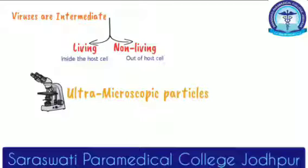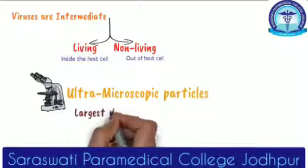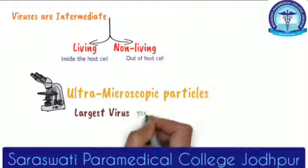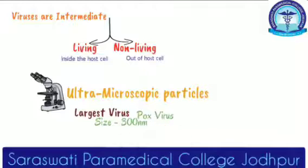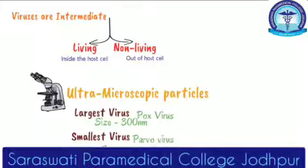Larger viruses can be seen with the light microscope, such as pox virus. One thing to remember is that smallpox — 'small' means small — but this pox virus is large in size, about 300 nanometers. And the smallest virus is the parvo virus, which is 20 nanometers. Please remember, this is very important.